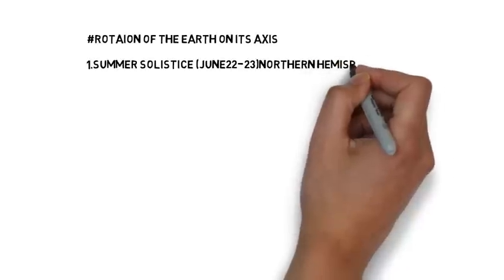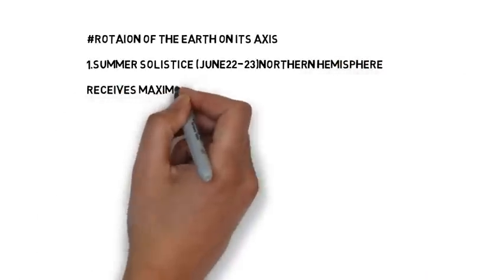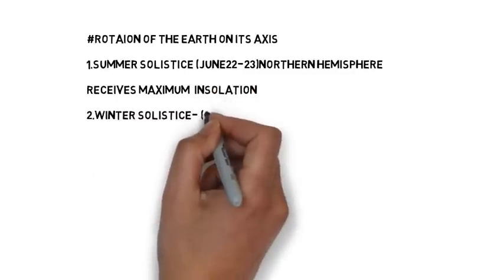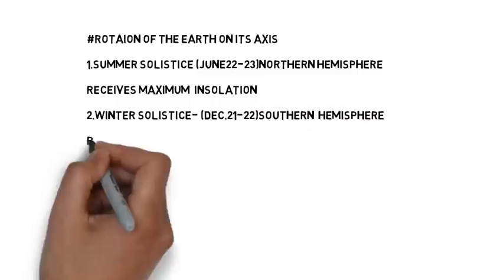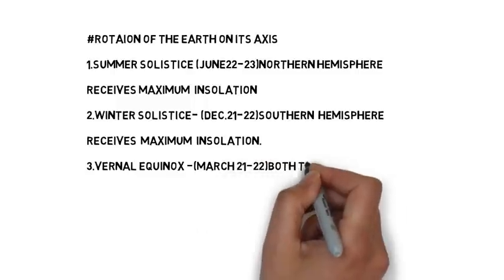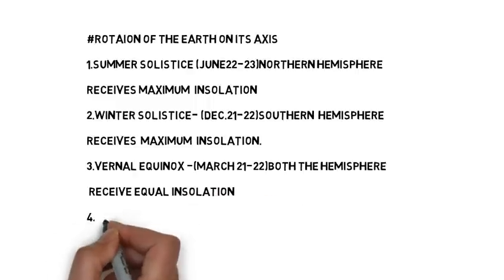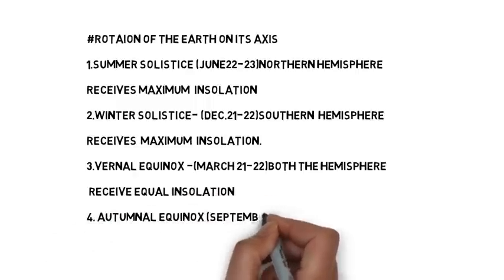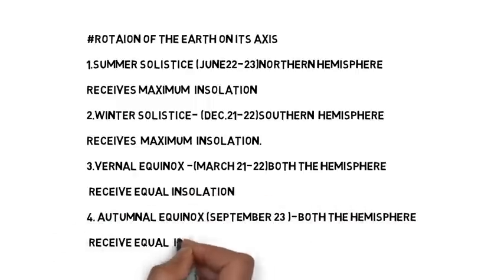On June 22nd or 23rd, summer solstice occurs in the northern hemisphere, which receives maximum insolation during this time. While winter solstice occurs on December 21st or 22nd in the southern hemisphere, when it receives maximum insolation. However, there are two points in the year when both hemispheres receive equal insolation and it is called equinox. In the month of March, there is vernal equinox, while in the month of September, autumnal equinox occurs.